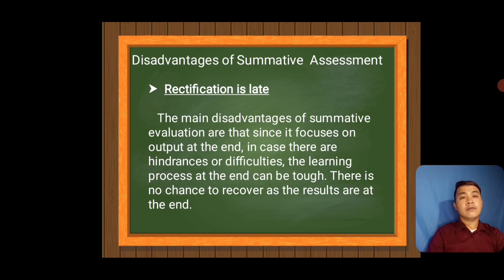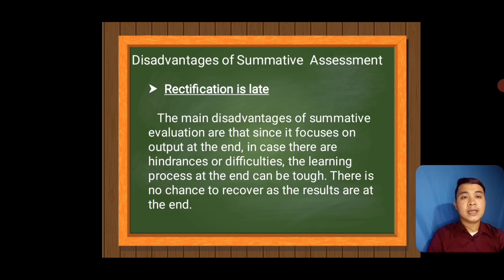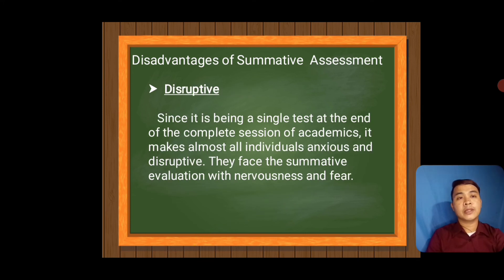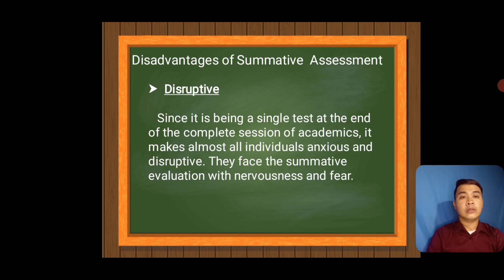The disadvantages of summative assessment: First, rectification is late. Since it focuses on output at the end, in case there are hindrances or difficulties, the learning process can be tough and there is no chance to recover as the results are at the end. Second, it is disruptive. Since it is a single test at the end of the complete academic session, it makes almost all individuals anxious and disruptive — they face the summative evaluation with nervousness and fear.